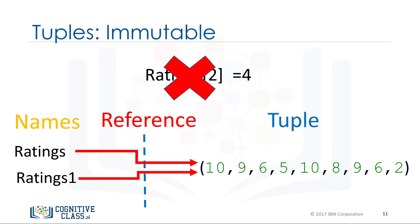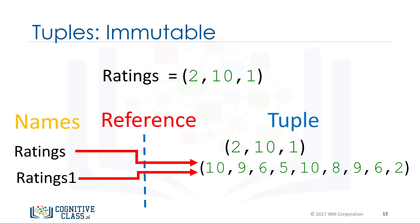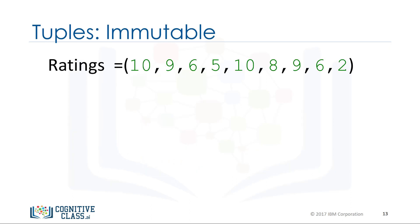Let's say we want to change the element at index two. Because tuples are immutable, we can't. Therefore, 'ratings1' will not be affected by a change in 'ratings' because the tuple is immutable — i.e., we can't change it. We can assign a different tuple to the ratings variable, and that variable now references another tuple.